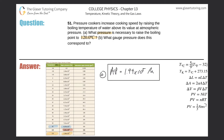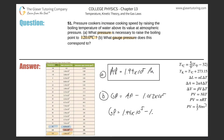For letter B: what gauge pressure does this correspond to? The formula is: gauge pressure equals absolute pressure minus 1.013 times 10 to the fifth Pascals. So plugging in, gauge pressure equals 1.99 times 10 to the fifth minus 1.013 times 10 to the fifth. And we get approximately 9.77 times 10 to the fourth Pascals.